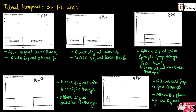This is the ideal response of an all-pass filter. An all-pass filter will allow all the frequencies to pass through. The function of an all-pass filter is to alter the phase of the signal; it will not change the amplitude of the signal.